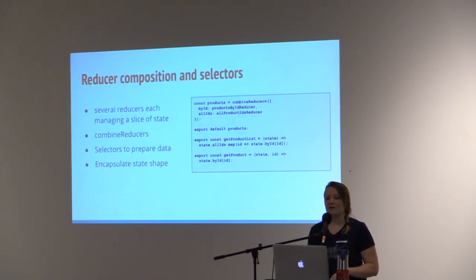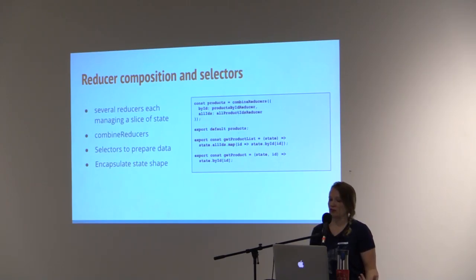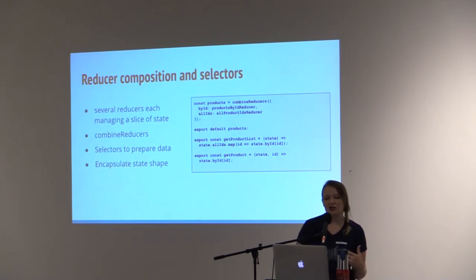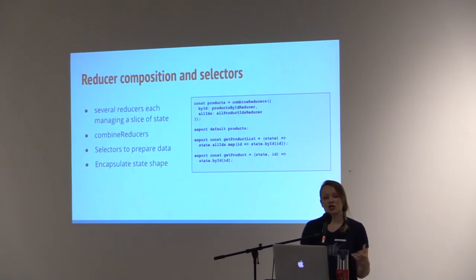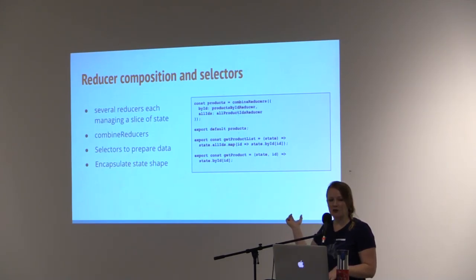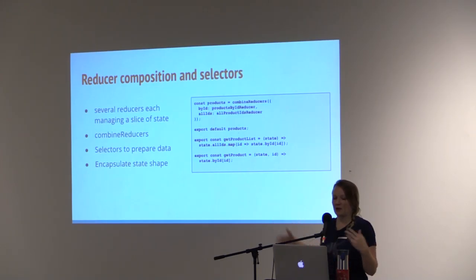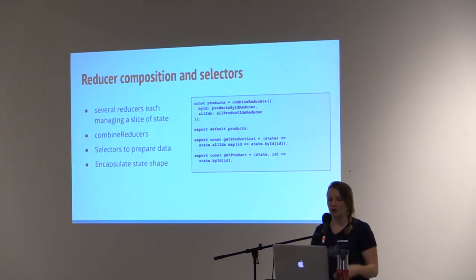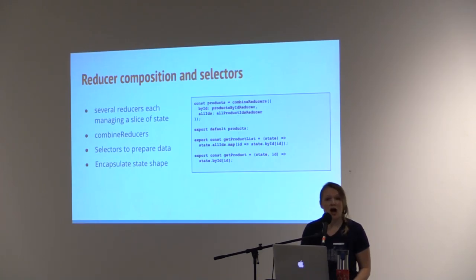In a larger-scale app, you'll likely have several reducers that each manage their own slice of the state. You'll use Redux's combineReducers, a utility that assigns the slices of state to those specific reducers. Selectors are functions that prepare the data in a way that views are expecting to display it. Your state shape should be encapsulated in the same file in which it's defined. Here we have a byId reducer for referencing each entry in the state object by ID, and an allIds array that we transform into an array for the application to give us a handy way to prepare that full set of data as the UI intends to use it.